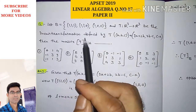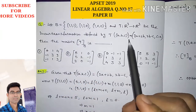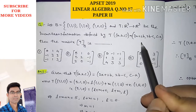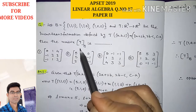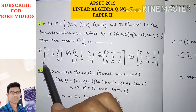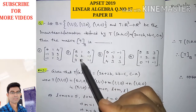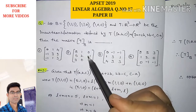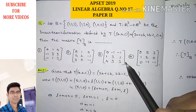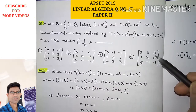The question is: let capital B be the basis consisting of three vectors (1,1,1), (1,1,0), and (1,0,0). T is a mapping from R³ to R³ with the linear transformation defined by T(A,B,C) = (3A+2B, 2B−C, C−A). The matrix representation of this linear transformation with respect to basis B is — with four options given as 3×3 matrices.